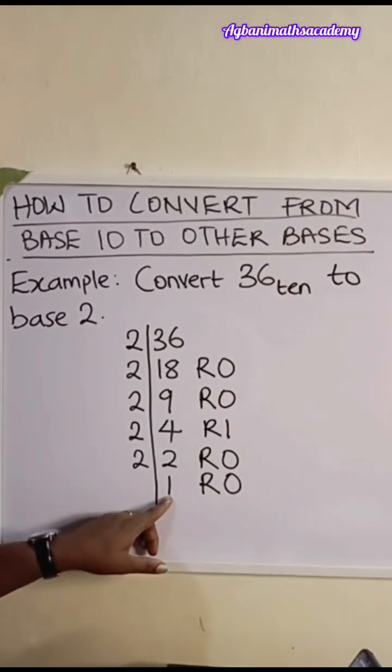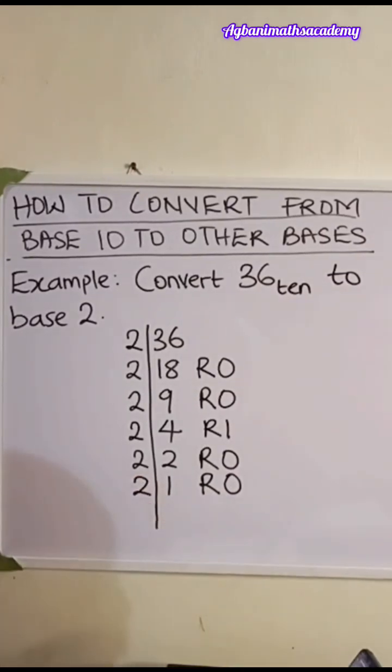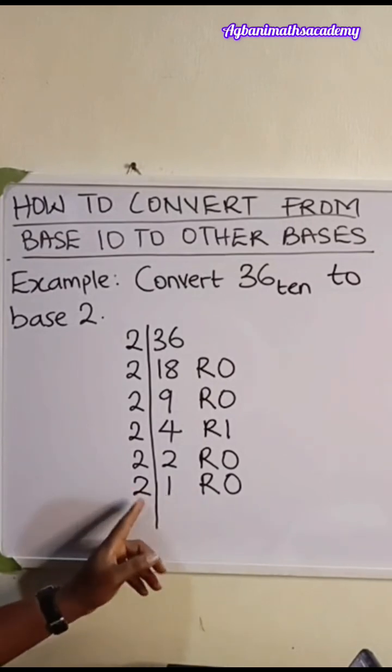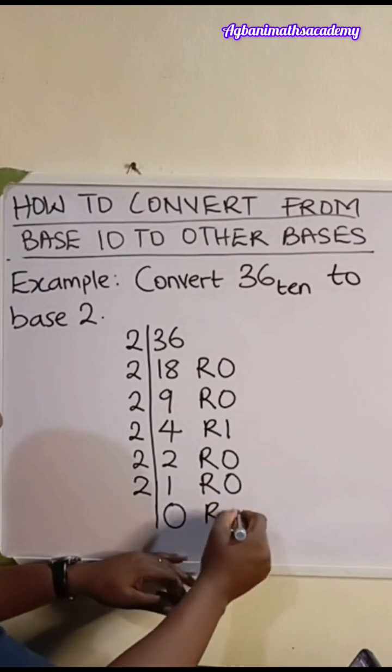We still divide 1 by 2. 1 divided by 2. How many 2 can we find in 1? It's 0. The remainder is 1.